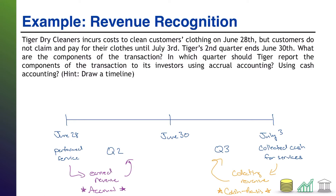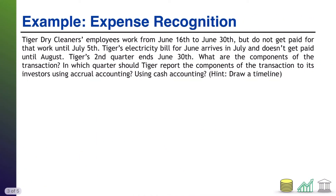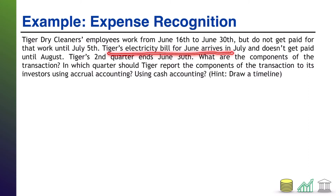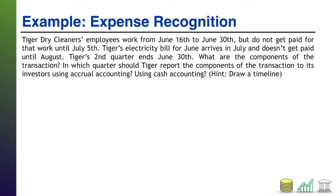Now we're going to use the same example but look at expenses rather than revenue. It's still Tiger Dry Cleaners with Q2 ending June 30th. We'll focus on what they're spending to clean the clothes. The employees work June 16th through June 30th, but don't get paid until July 5th — very common to get your paycheck a week or two later. Tiger's electricity bill for June arrives in July and doesn't get paid until August.